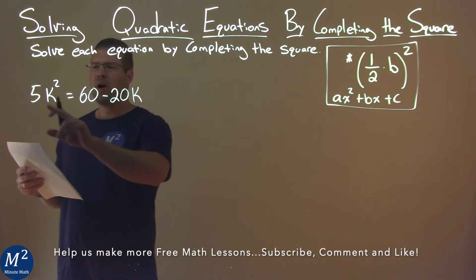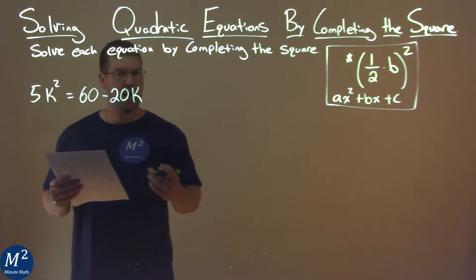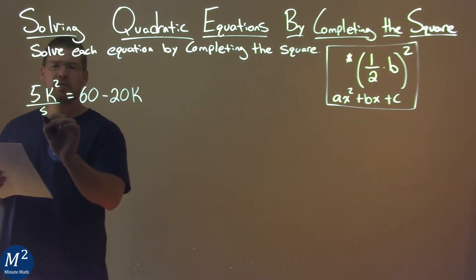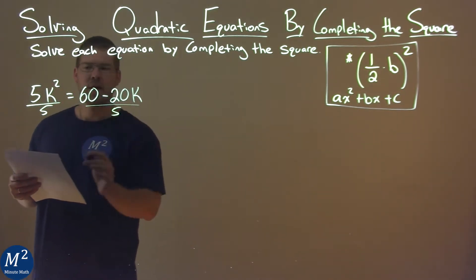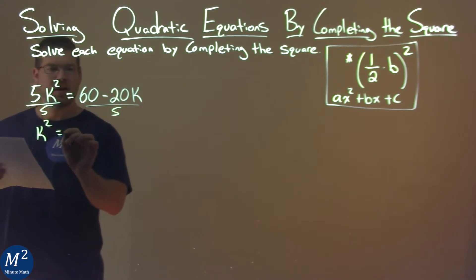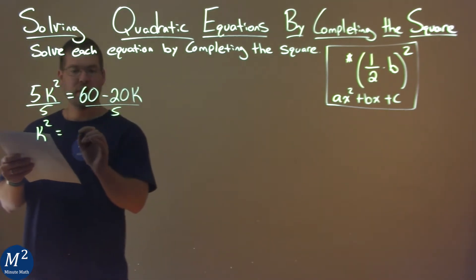First thing I notice is all my coefficients are divisible by 5. So I'm going to divide both sides by 5, and I'm left with k squared here equals, well, 60 divided by 5 is 12, and then 20 divided by 5 is 4, so we have 12 minus 4k.